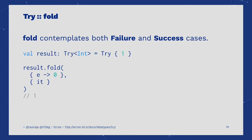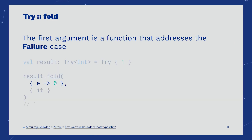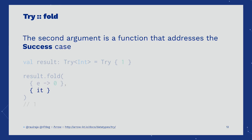An easier way to handle the cases of TRY is using FOLD. In the case of FOLD, we have two functions. The first function contemplates what will happen if the TRY was a failure and had an exception — we can provide an alternative value to return from the FOLD. If the TRY was a success, the second function will allow us to transform or do nothing with it.